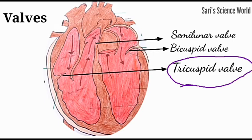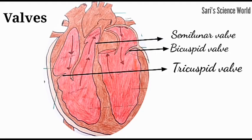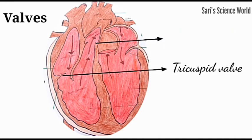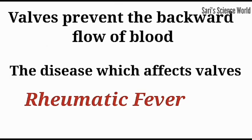The valve between the left atrium and left ventricle is called the bicuspid valve. The valves present at the beginning of the aorta and pulmonary artery are called semilunar valves. The function of the valves is to prevent the backward flow of blood.